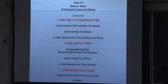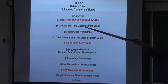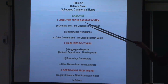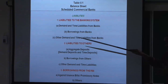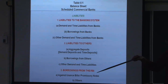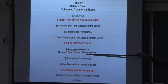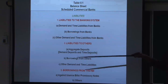Then we have borrowings from the RBI. Under liabilities to the banking system, item A is demand and time liabilities from banks — the demand deposit accounts of other banks and the time deposit accounts of other banks. Many people do not know that banks keep money in another bank, just like we keep money in a savings account or fixed deposit. Banks also do that with other banks.